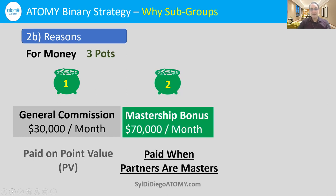We have $100,000 potential — that is the limit in Atomy, $100,000 a month of income. Out of that $100,000 a month, $70,000 or 70% comes from mastership bonuses. Mastership bonuses are paid when our partners who joined after us and worked together with us in synergy receive masterships. The big money — $70,000 — is from mastership bonuses. It's also faster if you're working with other people, both to gain new consumers and new income-seeking business partners.